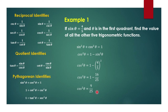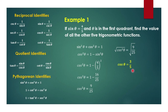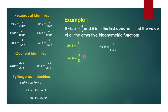We need to get cosine theta, so we take the square root of both sides of the equation. This gives us cosine theta equal to 3 over 5, since the square root of 9 is 3 and the square root of 25 is 5. Since we know sin theta, we can use the reciprocal identities to get cosecant of theta, which is 1 over sin theta. Getting the reciprocal of 4 over 5, cosecant theta equals 5 over 4.